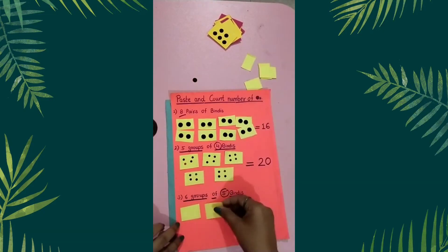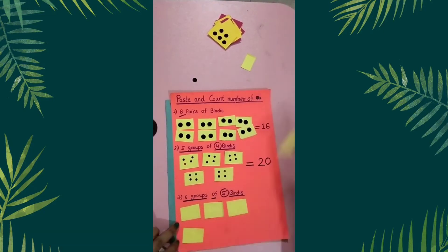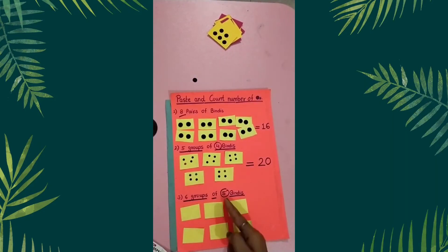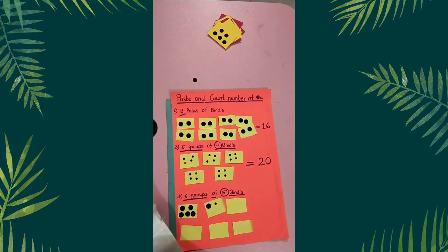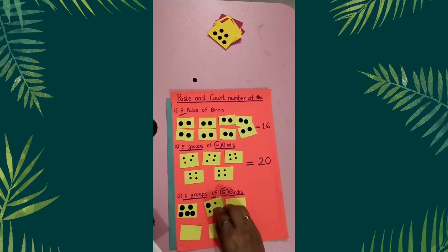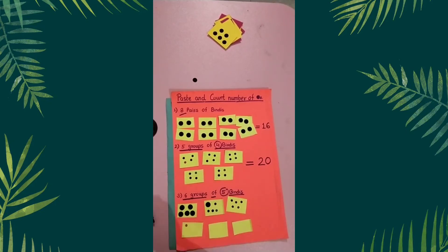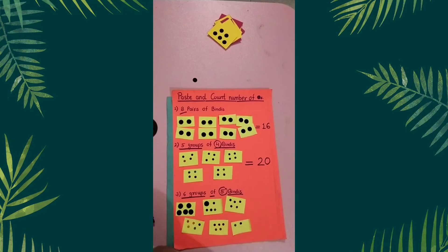Next question: six groups of five bindis. How many groups? Six. One, two, three, four, five, six — six groups of five bindis. We have to paste five bindis in each group: one, two, three, four, five. One, two, three, four, five.